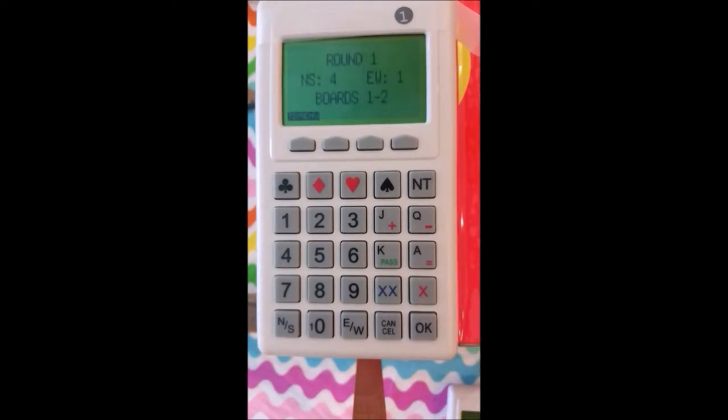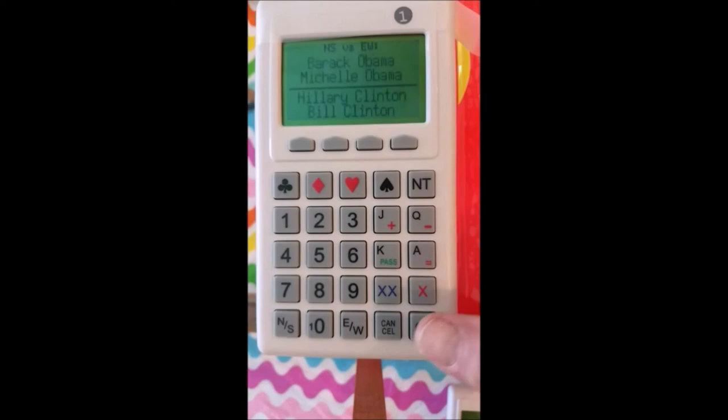All right, now it's telling us that we're going into Round 1 and Boards 1 and 2. This will be different depending on which kind of movement we have, whether we have a Mitchell or a Howell. Those numbers will differ somewhat. We'll hit OK, and it tells us who we're playing. It says Board 1. I keep hitting OK until it says what's the contract.